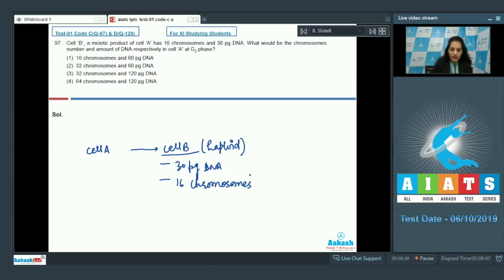The question is asking about the cell A - in G2 phase what would have been the amount of DNA and number of chromosomes in G2 phase of cell A. If you draw this cell cycle: this is G1, S, G2, M1 and M2. After M2 you have got this.